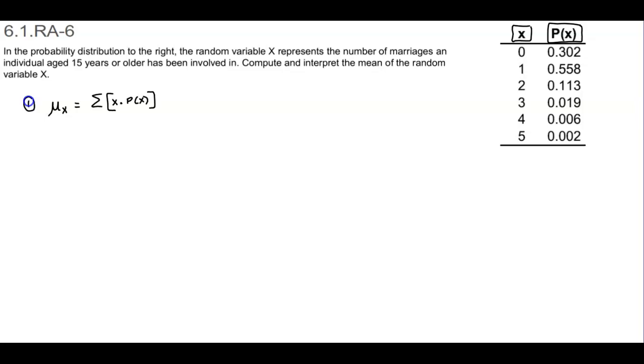We're going to use the formula to compute the mean of the random variable x. We have mu subscript x. The first value of x is going to be 0 and then we multiply that by the probability of 0. Then plus, we take 1 and multiply that by the probability of 1.